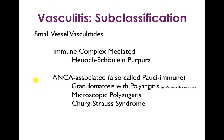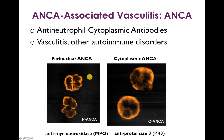Now let's talk about the ANCA-associated vasculitides, but first we need to recap what ANCA is. ANCA stands for antineutrophil cytoplasmic antibodies. These antibodies can be seen in vasculitis or other autoimmune disorders, and ANCA is classified into two major categories.